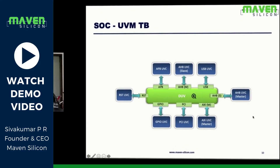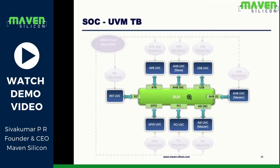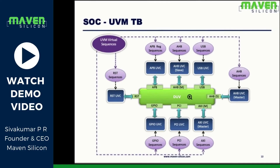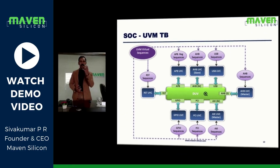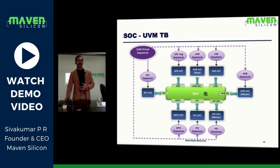The beauty is every UVC comes along with its own sequence library. That's the huge advantage of UVM. When you buy UVC — UVC is nothing but verification IP — when you buy UVC from a particular IP vendor, the IP vendor will also provide the stimulus.